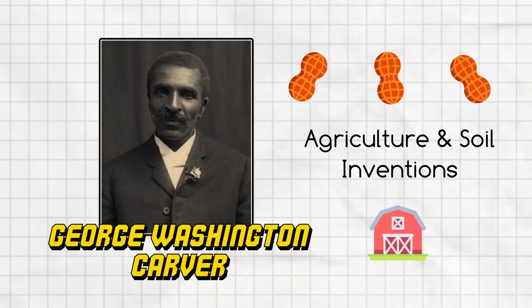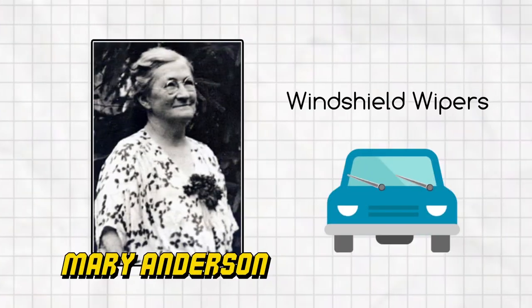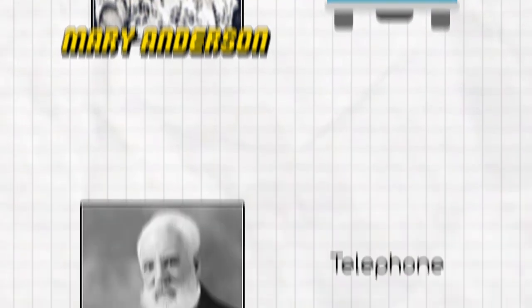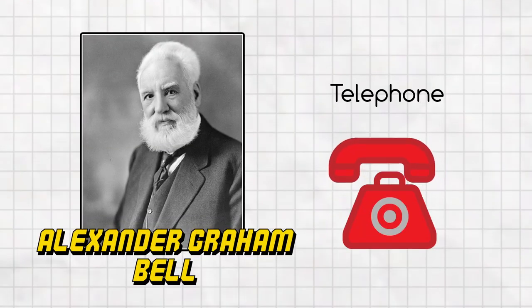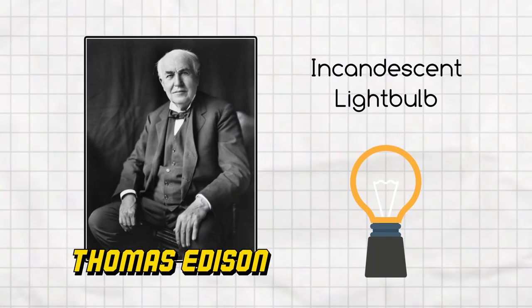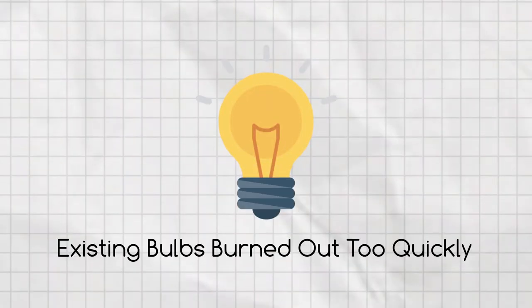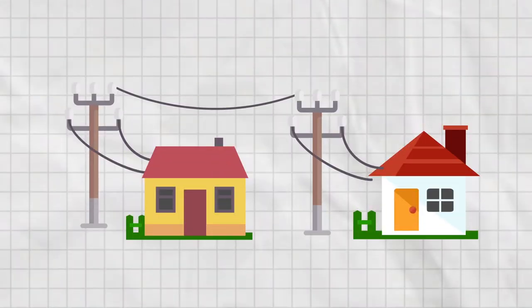Throughout history, inventors have been motivated to create because they want to improve the lives of others or to solve a problem, either by building a product or starting a business. Their eyes and minds are open. Thomas Edison wanted to bring electricity to every home and community. He realized that existing light bulbs burned out too quickly and there was no system to deliver electricity to homes, so he set out to solve this problem. Today we can thank him that we're no longer stuck in the dark.